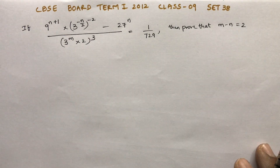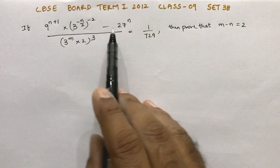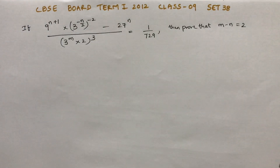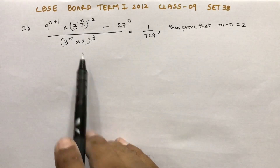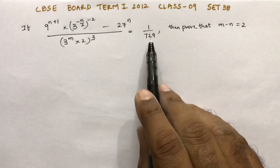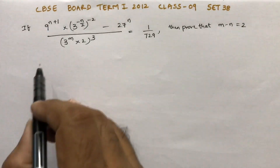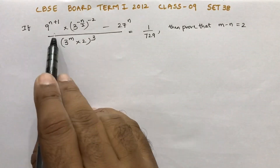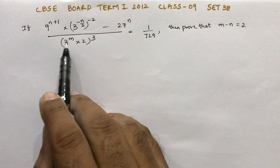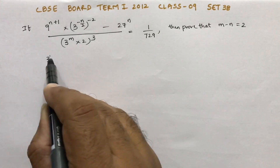If 9 power n plus 1 into 3 power minus n by 2, whole power minus 2, minus 27 power n by 3 power m into 2, whole power 3 equals 1 by 729, then prove that m minus n equals 2. So here write all the terms in terms of 3 — all the values like 3 squared.